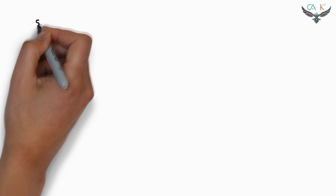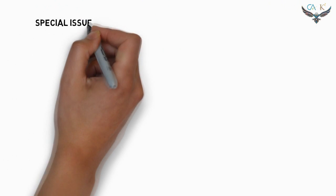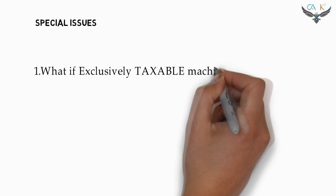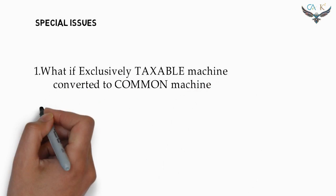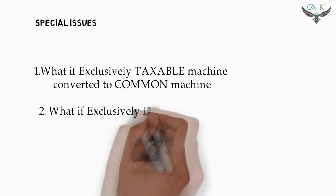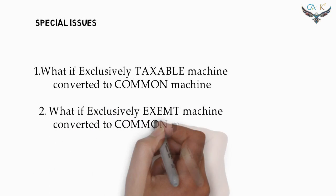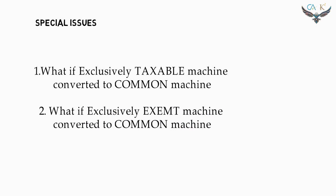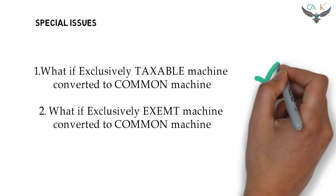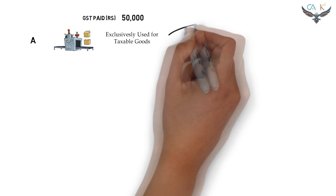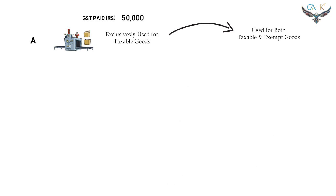Now let us see the special issues of Rule 43 of the GST Act. What if a machine previously used exclusively for taxable goods is now converted to make taxable as well as exempted goods? In continuance to the original example, Machine A, which was previously used for making exclusively taxable goods, has now been converted to make exempted as well as taxable goods.